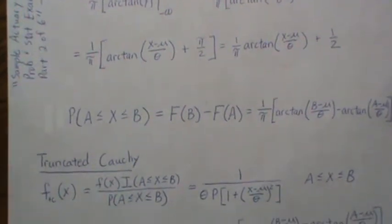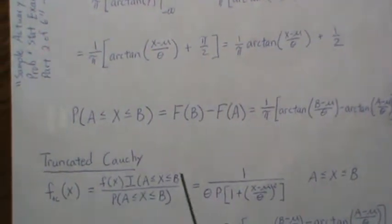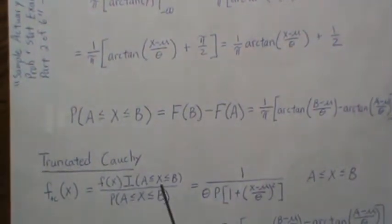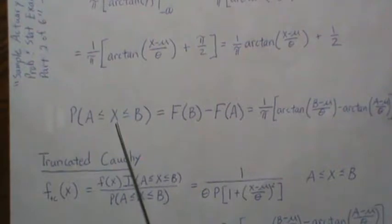Now to develop a truncated Cauchy, say F_TC. And I'm going to drop the subscript, but I want to put it here to show you that this F is a little bit different than this F. This F is the Cauchy. But this, we have an indicator function where X is between A and B. So it's 1 for this relationship and 0 otherwise. And then we have to divide by the probability of being between A and B. And that's what we calculated here.